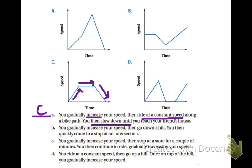Looking at the second description, you gradually increase your speed, then you go downhill. You then quickly come to a stop at an intersection. Looking at A, B, and C, we can rule out B because that's like a steady speed right at the beginning. So I bet you guys are all looking at D, that you increase your speed, then go downhill, because it looks like a mountain. But what happens to your speed when you go downhill? Is it slower or faster?